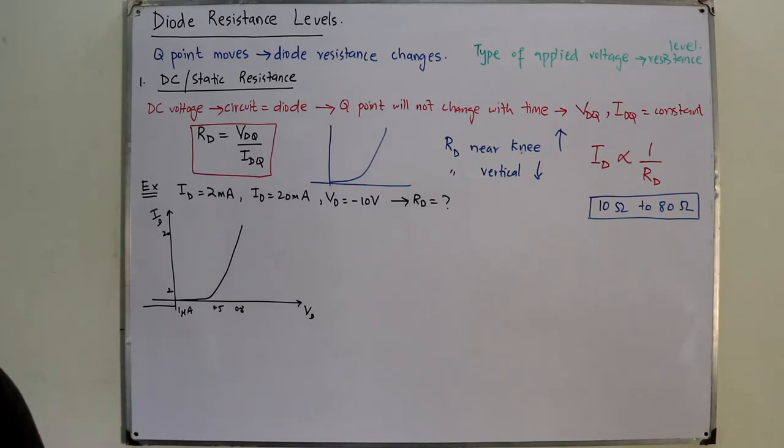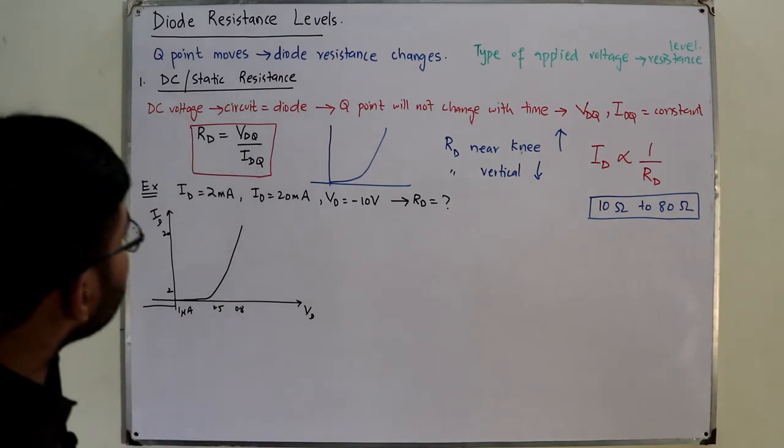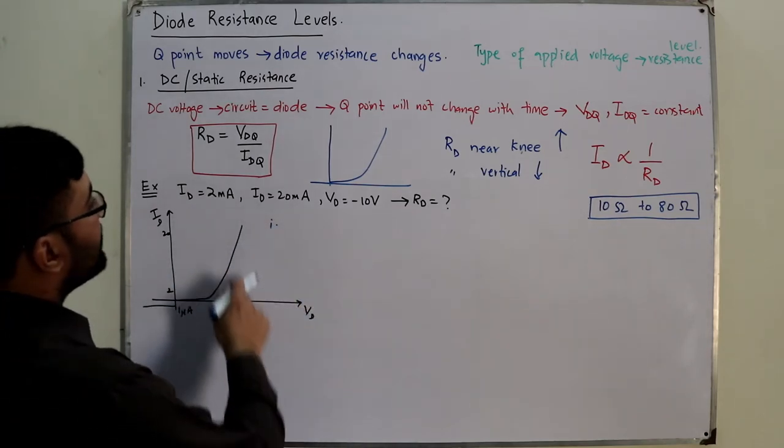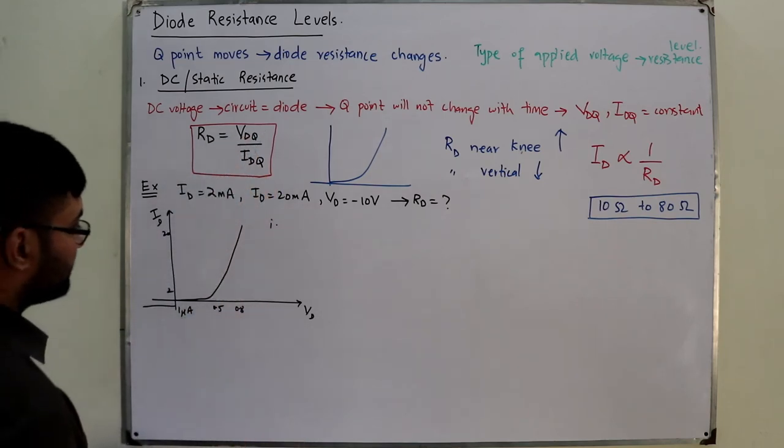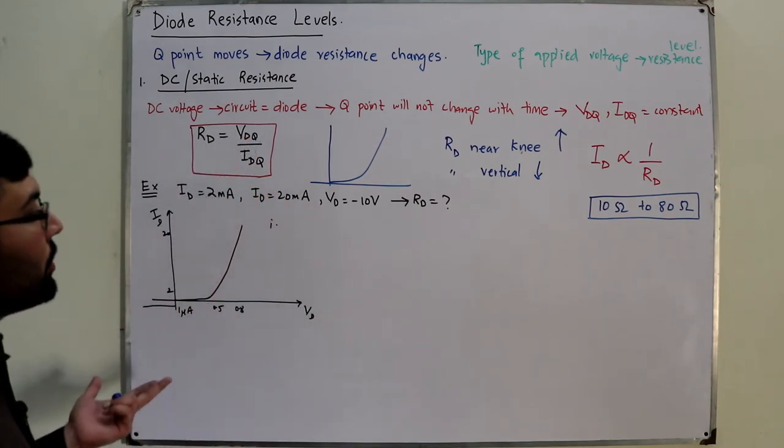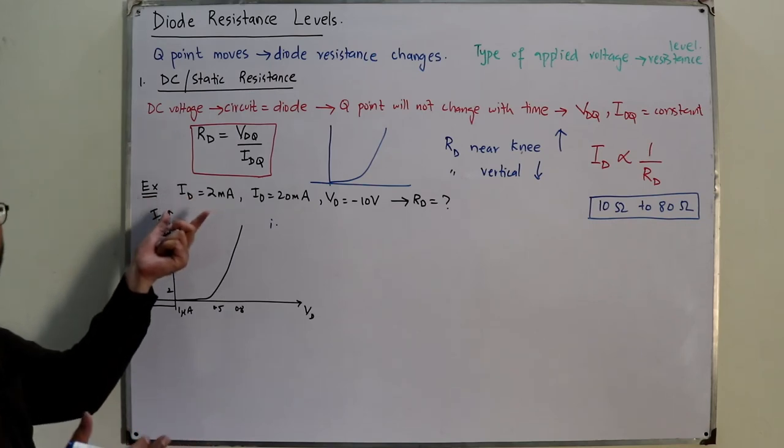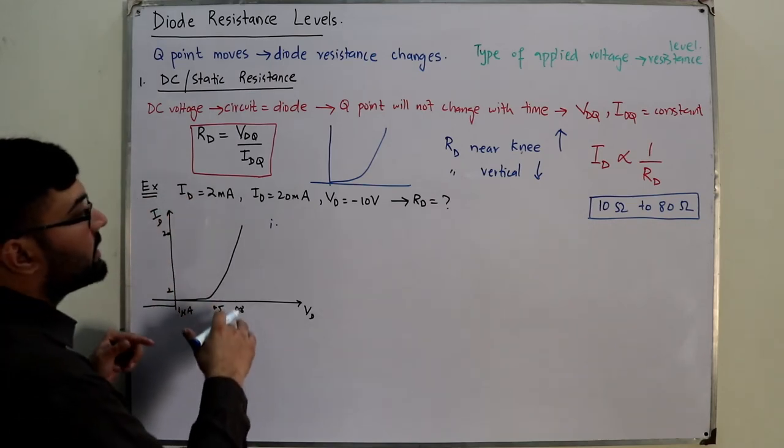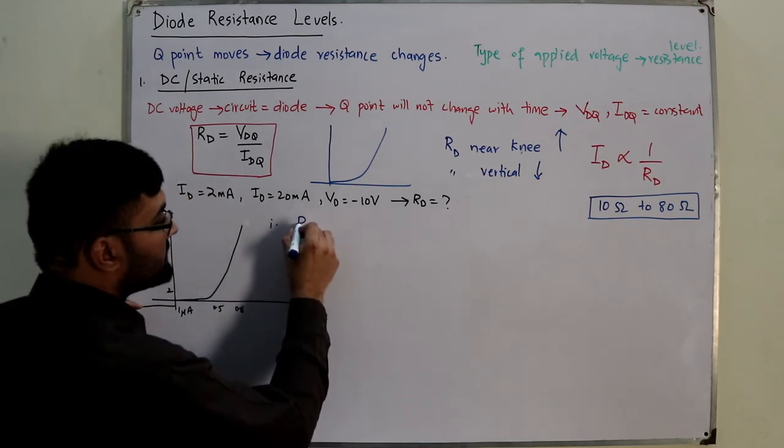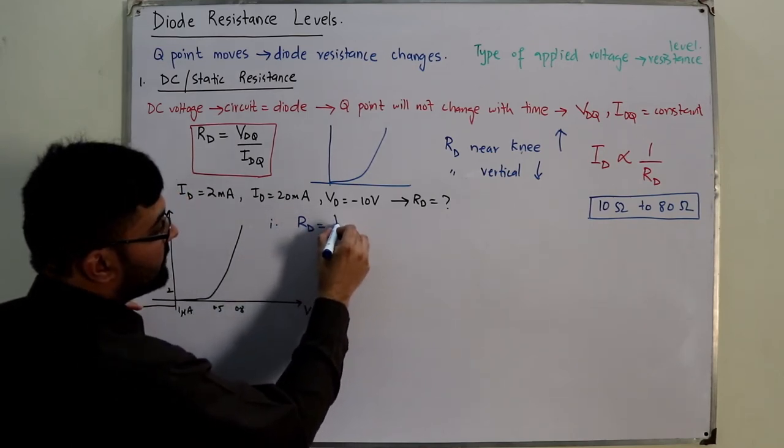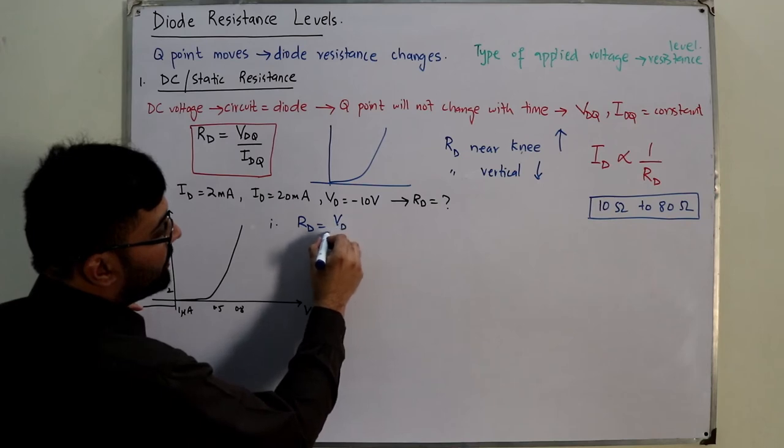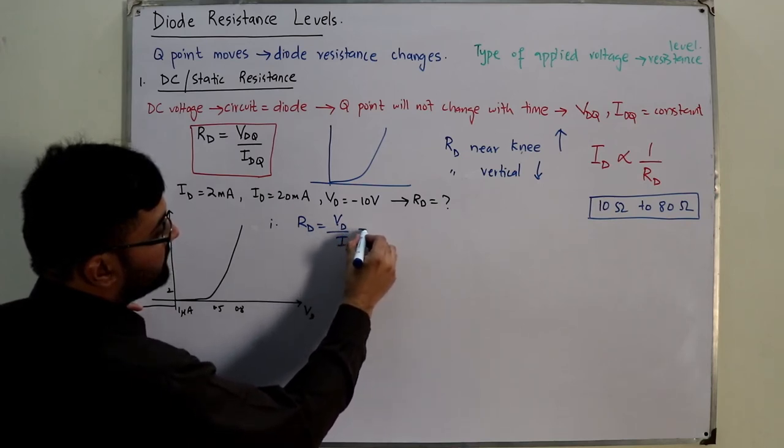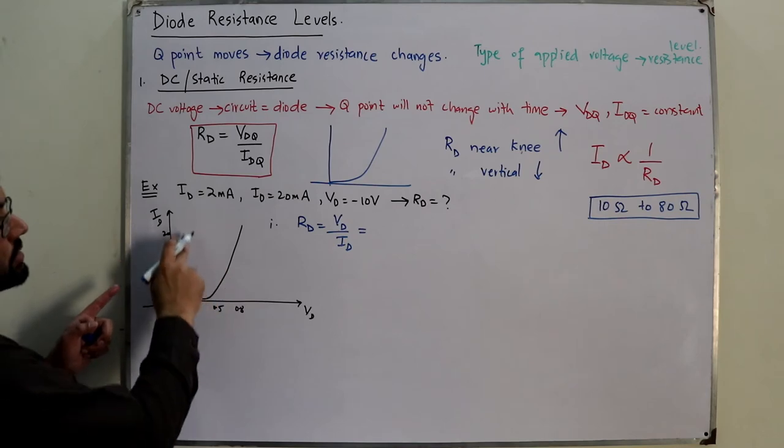So, Rd is equal to what? Simply, case number 1, Rd is Vd upon Id. Let's say we are not given the Q-point. If we are given one thing, we can know the other thing from the graph. We can directly do it if not given the Q-point. So we can say that Rd would be equal to Vd upon Id.